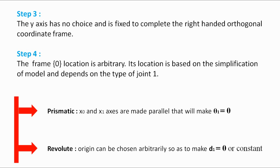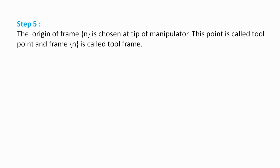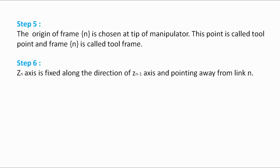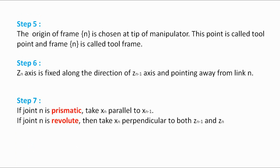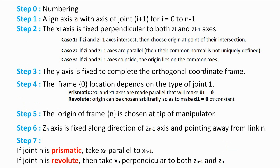Moving to step 5: the origin of frame n is chosen at the tip of the manipulator. This point is called the tool point, and frame n is called the tool frame. The Zn axis is fixed along the direction of the Zn-1 axis, pointing away from link n. If joint n is prismatic, xn is taken parallel to xn-1. If joint n is revolute, xn is perpendicular to both zn-1 and zn. The yn axis is chosen to complete the right-handed orthogonal frame n. With these steps, all frames are fixed. Remember, it is desirable to make as many joint-link parameters as possible equal to 0, as this will make calculation of the kinematic model easier.